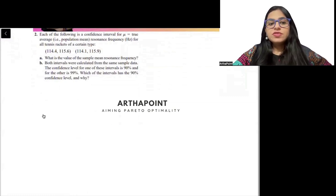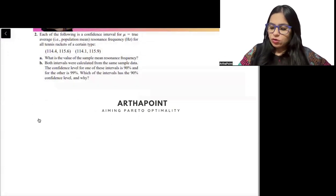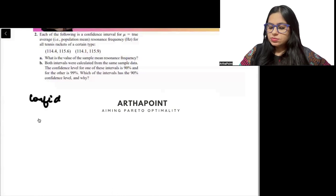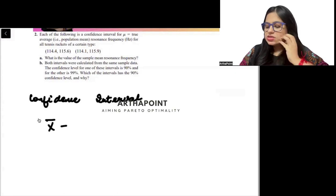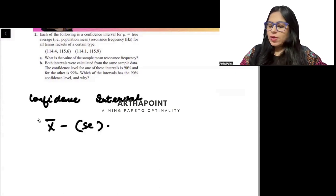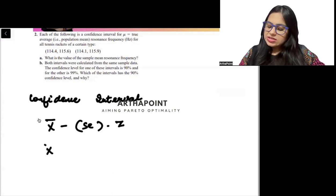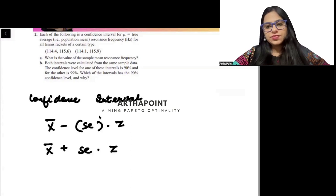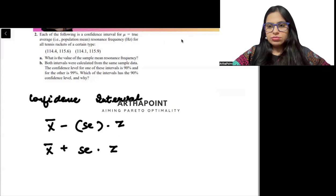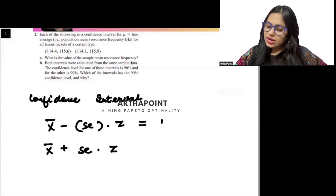So we know that in order to write confidence interval, it is x bar minus standard error into the value of z and x bar plus standard error into the value of z. This is how we go ahead and this is how we find out the confidence interval, right? This gives us the lower value. The lower value is given us as 114.4.